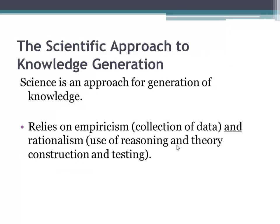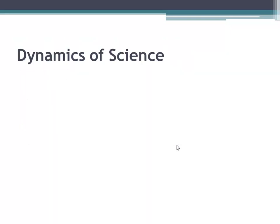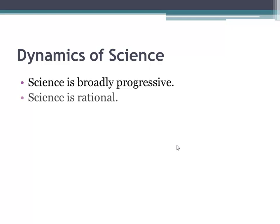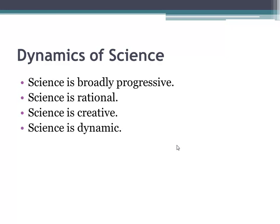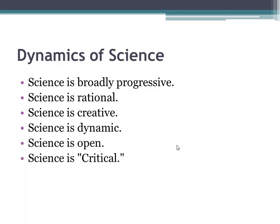Science is also an approach for the generation of knowledge. It relies on a mixture of empiricism — the collection of data — and rationalism — the use of reasoning and theory construction and testing. Science has many distinguishing characteristics. First, science is progressive; as Newton said, we stand on the shoulders of giants. Science is also rational, creative, dynamic, open, critical, and never-ending.